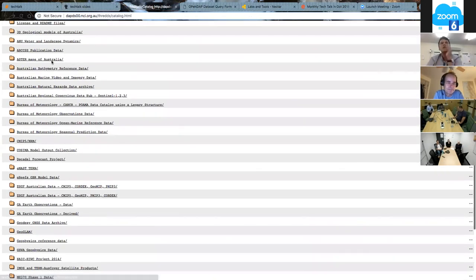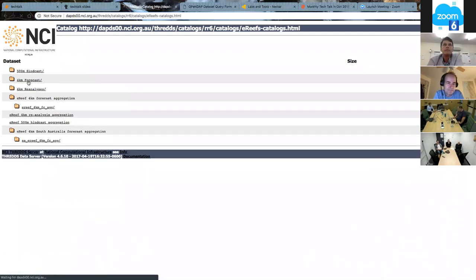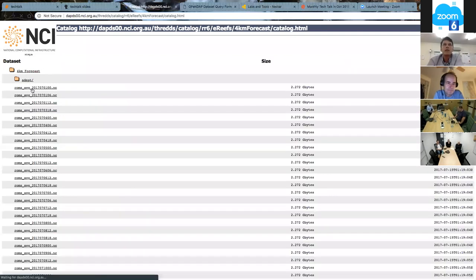This THREDDS data server, we have a whole bunch of data sets from different communities, whether it be weather, geophysics, satellite data. In order to access a data set, we can see these files are roughly 2.3 gigabytes. So we don't want to be downloading that. So we want to use some sort of service on it.